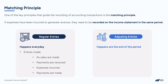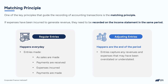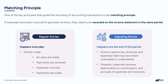The second type are what we call adjusting entries. These typically happen at the end of a period — maybe it's a month, a quarter, or a year — and they're used to make sure that everything is properly accounted for. They're typically not related to day-to-day activities, but instead they're used to make sure that any expenses or revenues that might have been recorded incorrectly are fixed. In this course, we'll be talking about a few different types of adjusting entries, like prepayments, unearned revenue, depreciation and amortization, and accruals of expenses and revenues. Don't worry — I'm going to talk you through those terms as we go along.